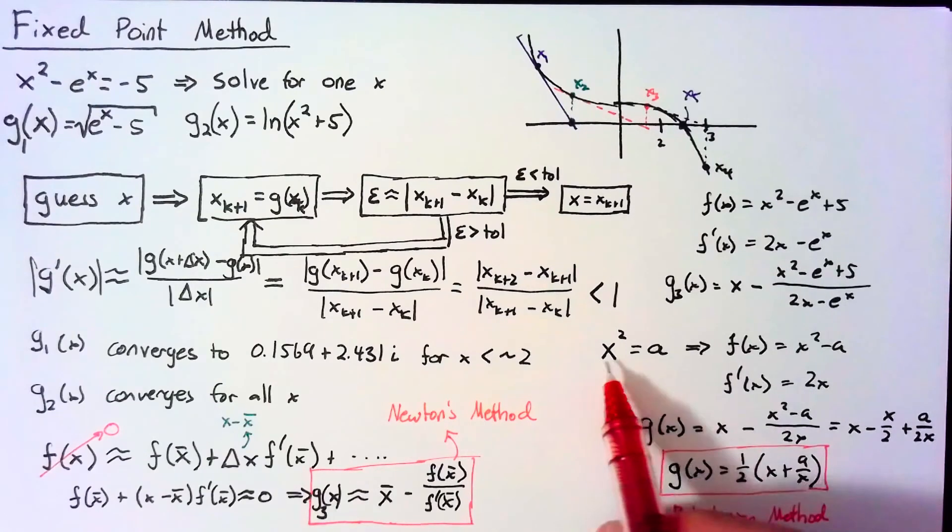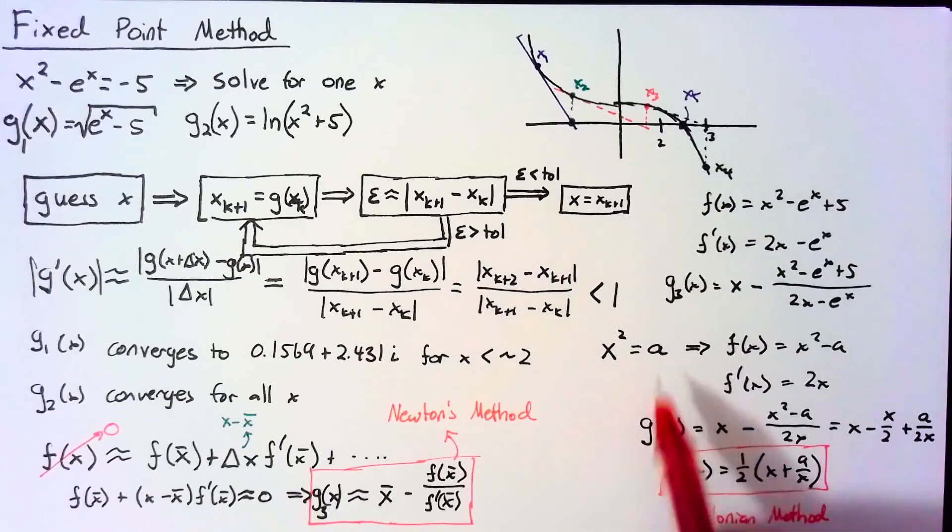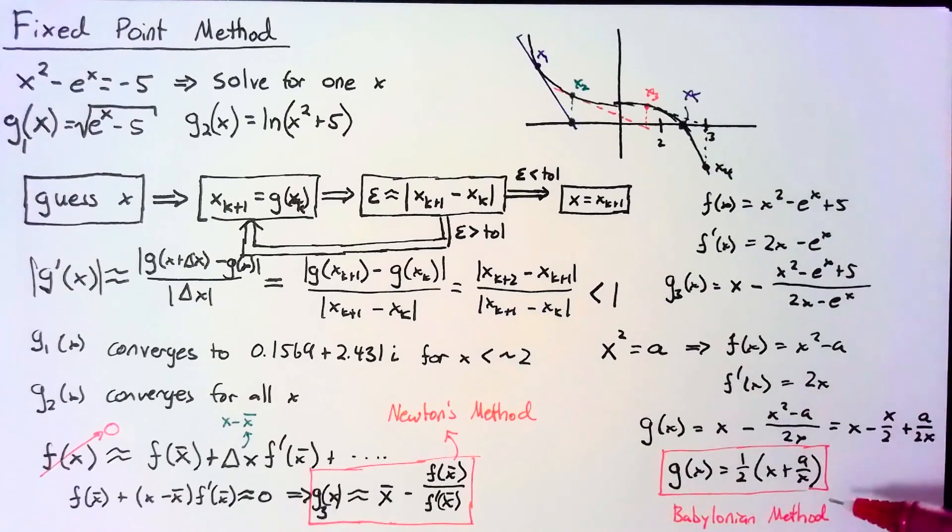And what this equation is, is the Babylonian method to find the square root of a value. So this is solved when x = √a. Well, running through this step just a few times gives you a pretty good approximation for the square root of a.